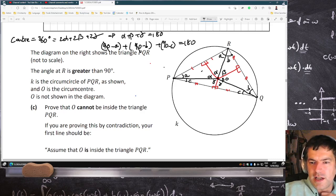Those two 90s cancel with the 180, so I'm left with minus A minus B minus C plus 90 has to equal 0.